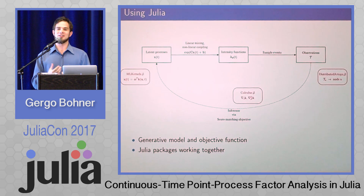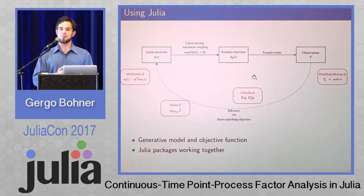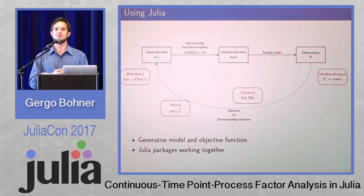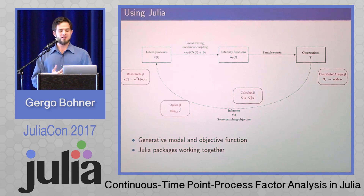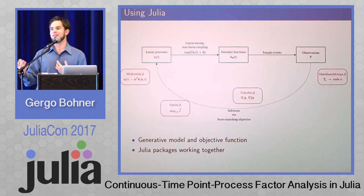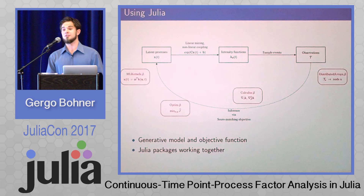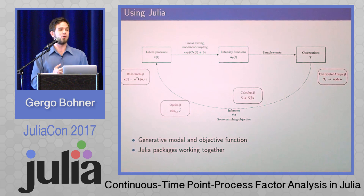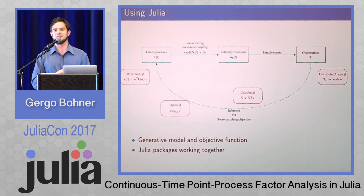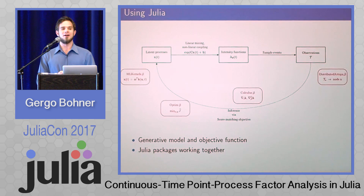To estimate hyperparameters you need some optimization framework — either grid search or smarter optimizations. I tried to use Optim.jl for that. Basically we need a generative model, an objective function, and a bunch of Julia packages working together to achieve the visualization goal. This has already been done, and the Julia implementation using this model is about 10 to 100 times faster than similar Matlab-type models. I'm very happy with Julia in terms of speed and ease of coding, though I had a lot of issues with parallelization.